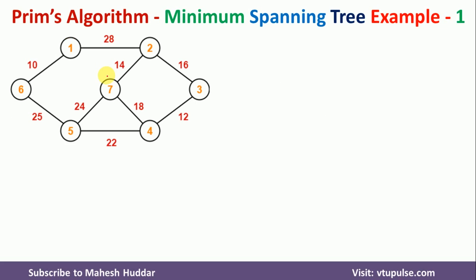Now we will take this example to understand how to draw the minimum spanning tree. In this graph, we have seven nodes and it is an undirected connected graph. In Prim's algorithm, we scan the graph initially and try to find the edge with the minimum weight. The edge between node 1 and node 6 has weight 10, which is the smallest. So we start constructing the spanning tree with this edge — node 6 and node 1, with weight 10.